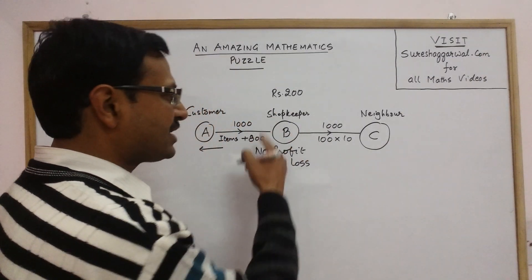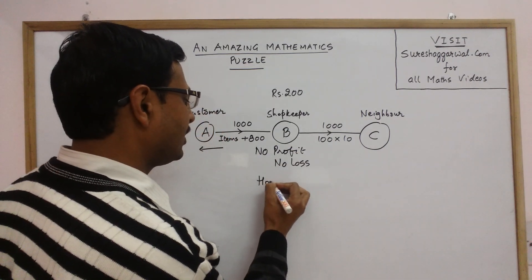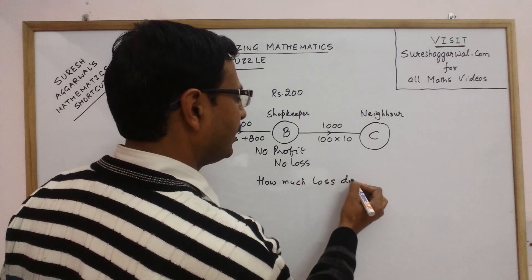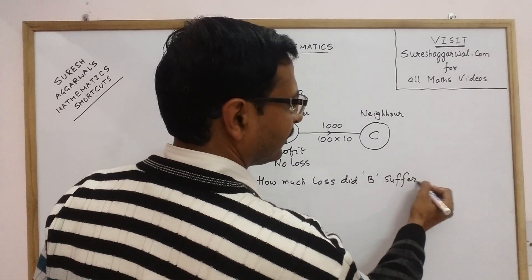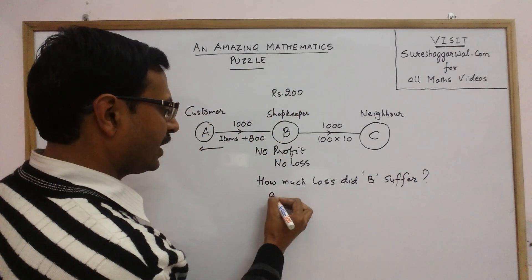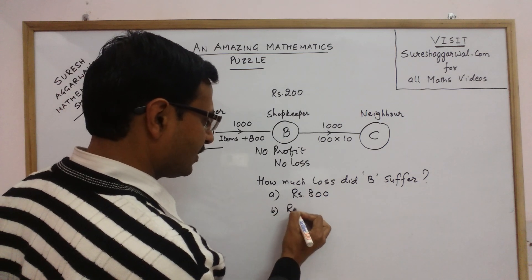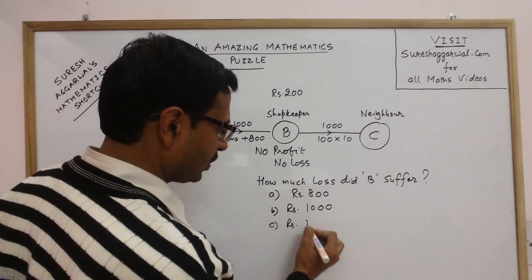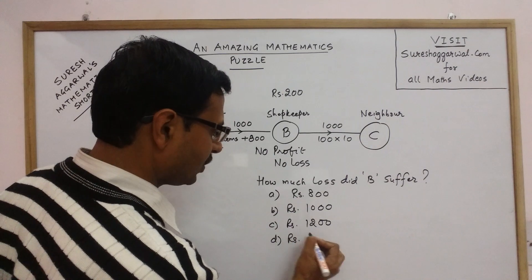So obviously B suffered a loss. Now you need to tell me how much loss did B suffer in the transaction. Your options for the answer are rupees 800, rupees 1000, rupees 1200, or rupees 2000.